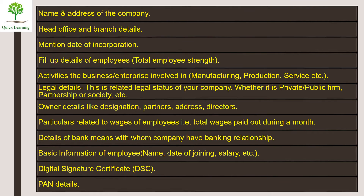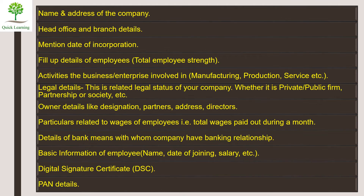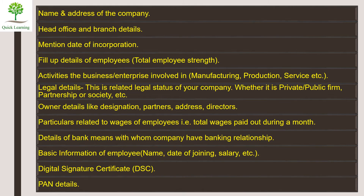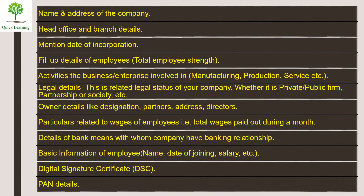What are the documents required for EPF registration? The list of documents which we need for employer EPF registration is: first, name and address of the company; second, head office and branch office details; third, date of incorporation; fourth, total employee strength; and fifth, business activities like manufacturing, production and service.